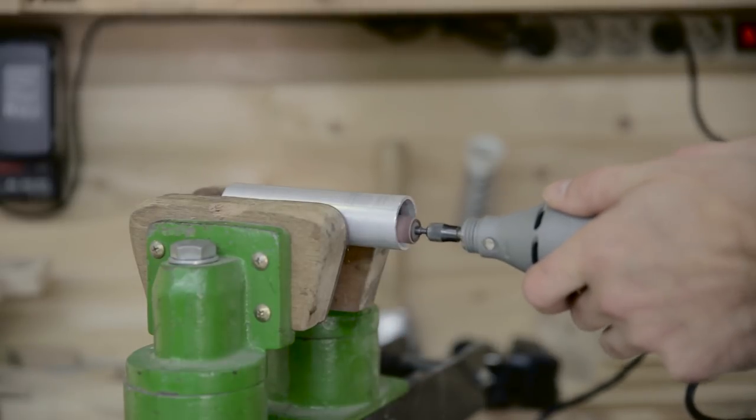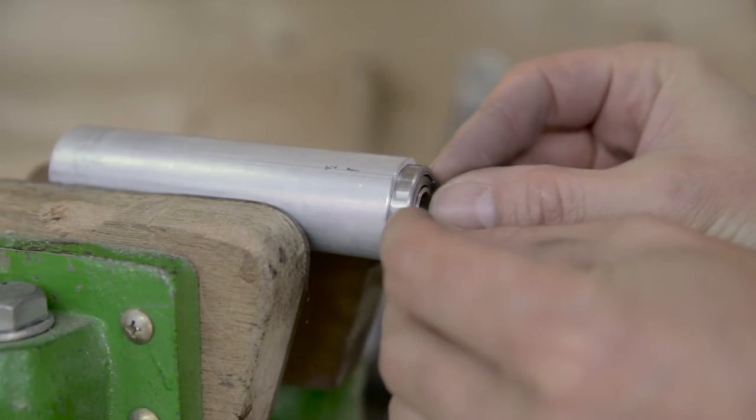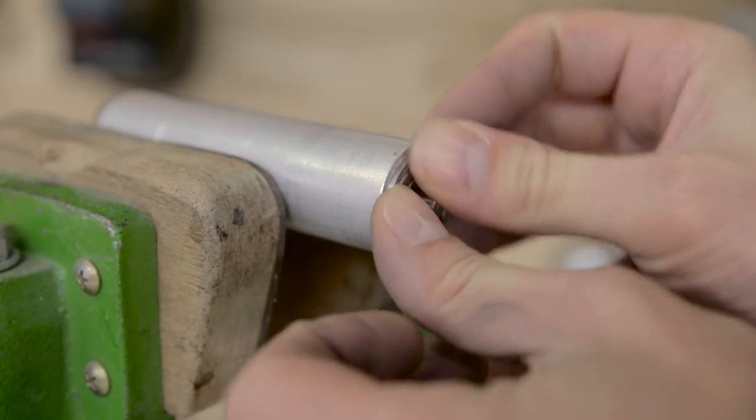I'll sand it with a dremel to make it fit and so that we can lock it inside the pipe. We do this little by little, making sure at the end that there's half a millimeter sticking out more or less.